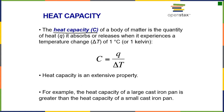Heat capacity, capital C, is a measure of how hot or cold a body or an object gets when it experiences heat. For example, if you have a coffee cup in your cabinet and you put it in the microwave and the cup itself gets very hot, it would have a low heat capacity — it would be easy to heat up. If you have a different coffee cup that doesn't get particularly hot in the microwave, it is going to have a higher heat capacity, being more difficult to heat up.